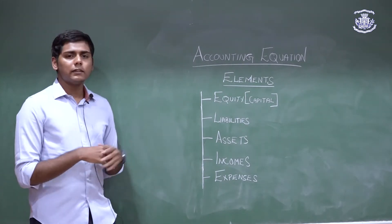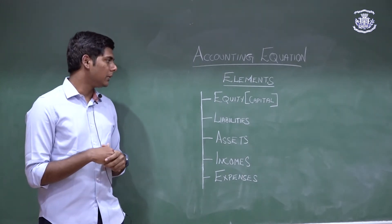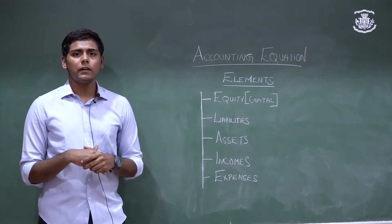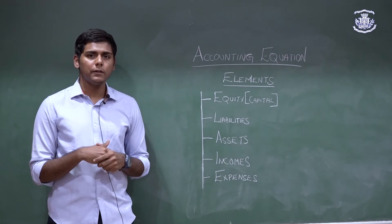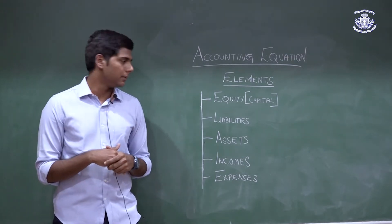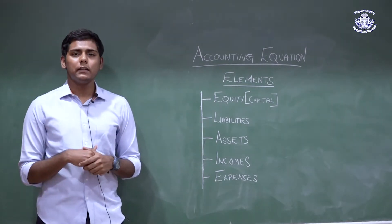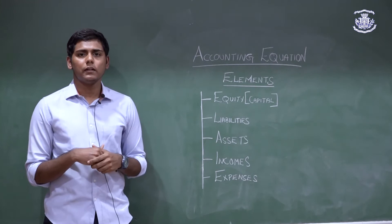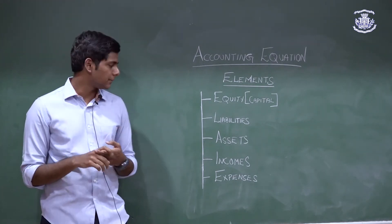Let's look at each element. First, we have equity, usually referred to as capital — it is any money introduced into the company by the owners, or any money withdrawn by the owners such as drawings. Liability is any money owed to an external third party, such as bank loans and debentures.